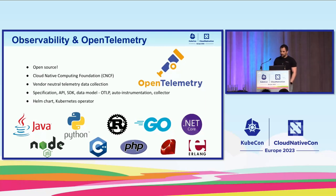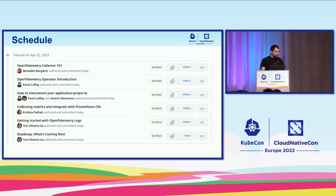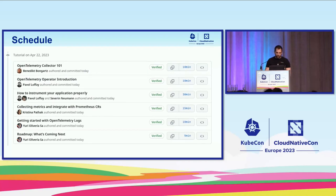We will speak about the collector first. You can run it on Kubernetes, on OpenShift, or on your PC itself. We go first to the OpenTelemetry collector, figure out how the configuration works and what we can do with it. Then Pavel will show how the operator works, Severin and Pavel will continue with instrumentation including auto-instrumentation, Christina will show integration with Prometheus and CRs, and finally Yuri will show how to get logs from nodes.